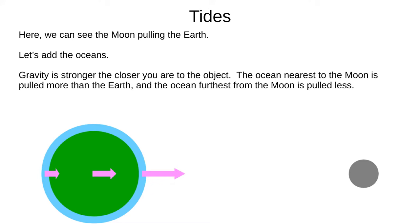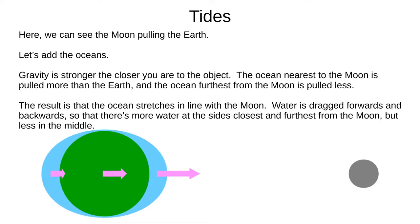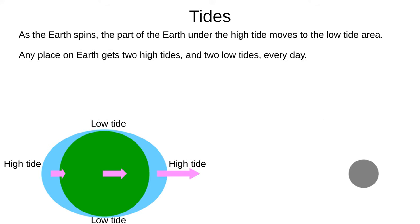The water nearest the Moon is pulled more strongly than the Earth, and the water on the other side is pulled less strongly. This causes the oceans to stretch in the directions towards and away from the Moon. This additional water comes from the surface of the Earth that's in the middle.